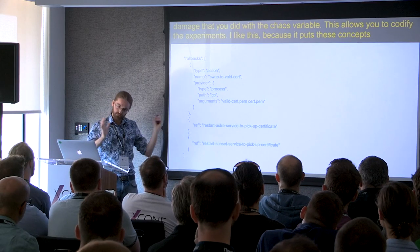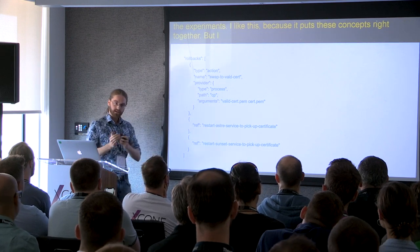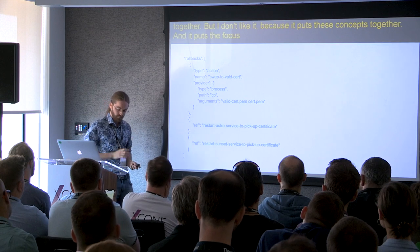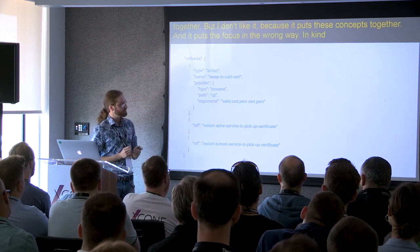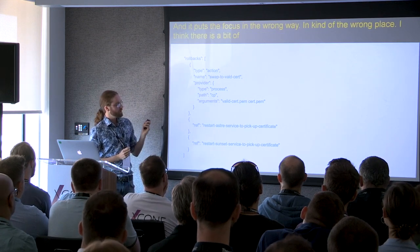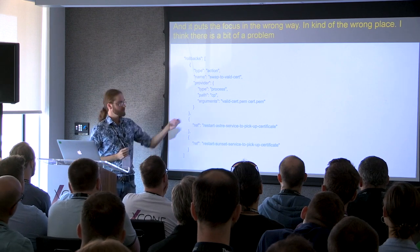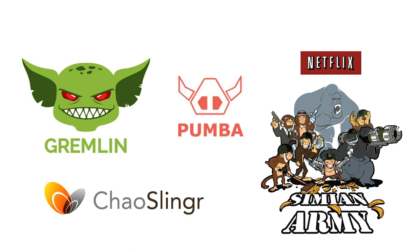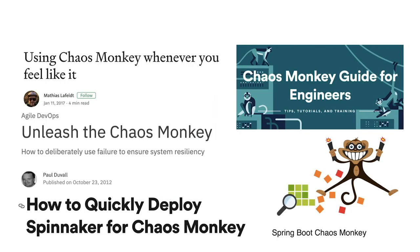This allows you to really codify these experiments. I like this because it puts these concepts right together. But I also don't like it because it puts these concepts right together and actually shifts the focus in the wrong place. I think there is a little bit of a problem in the chaos engineering community, to be honest. There are hundreds of tools, thousands of articles on how to get started with Chaos Monkey. We have an obsession with Chaos Monkey. It's got a very funny name. We like Chaos Monkey. But I think this is the wrong place to start.